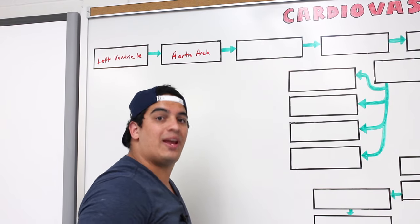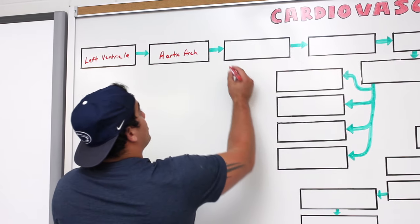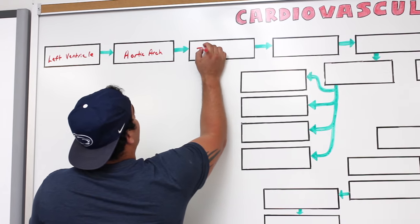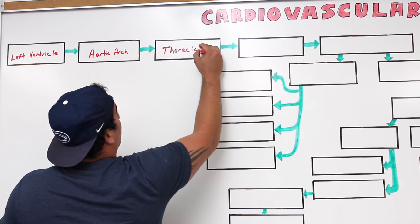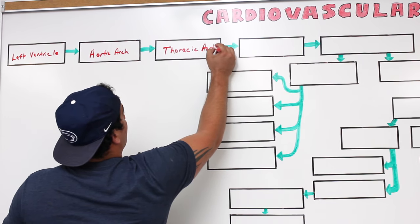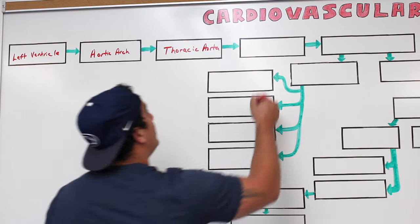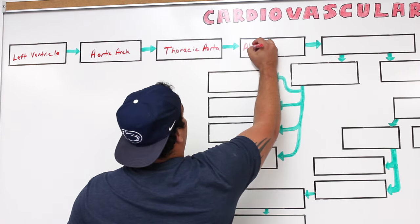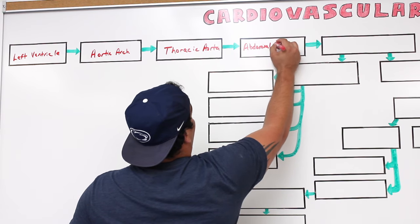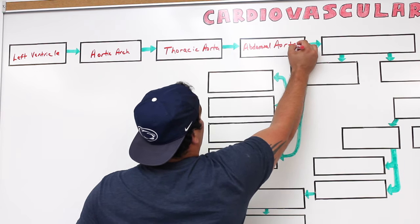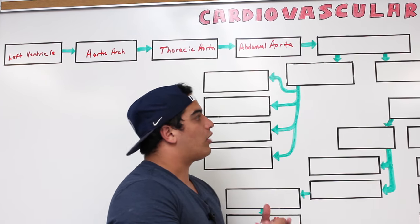After the aortic arch, the blood starts descending — first through your thoracic cavity, then into your abdominal cavity, because we have to get to the legs. So it descends as part of what's called the thoracic aorta, and then it moves through the diaphragm into what's called the abdominal aorta.